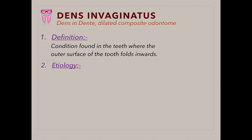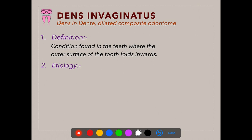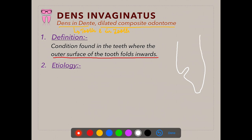Coming to the next developmental disturbance — dens invaginatus, also known as dens in dente or dilated composite odontome. Dens in dente means 'tooth within a tooth.' It is a developmental condition found in teeth where the outer surface of the tooth folds inwards. In a sagittal section, the outer surface folds inward in close proximity to the pulp.